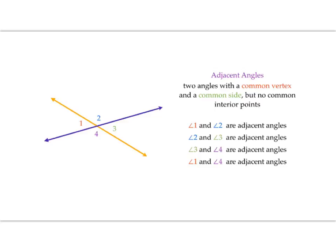Adjacent angles are two angles with a common vertex and a common side, but no common interior points. For example, angle 1 and angle 2 are adjacent, as are angle 2 and angle 3 — side by side. Angles 3 and 4 are adjacent, and 1 and 4 are adjacent. But angles 2 and 4 are not adjacent, and angles 1 and 3 are not adjacent.